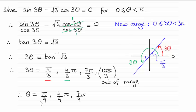And as you can see, the answers, there's three of them, are pi over nine, four pi over nine, and seven pi over nine.